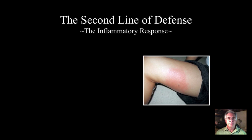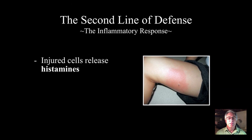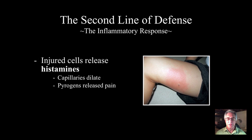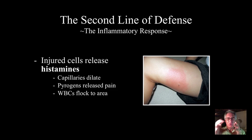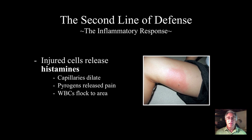If for some reason those pathogens or particles get into our bloodstream or into our bodies, there's a second line of defense called the inflammatory response. Typically, when there's any kind of breach in the skin or tissues, there's a release of histamines. The histamines allow the capillaries to dilate, and then the pyrogens cause some pain and heat to start the healing process. It also sections off the area, so white blood cells — particularly phagocytes and other lymphocytes — flock to that area and start chomping away at the bacteria, helping reduce the swelling.